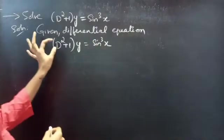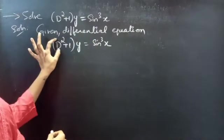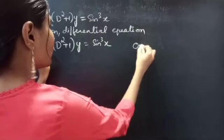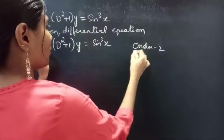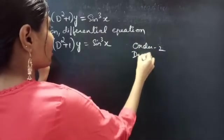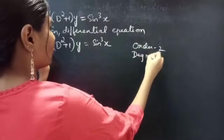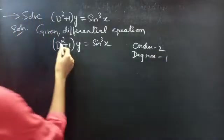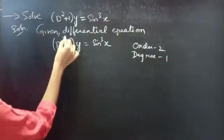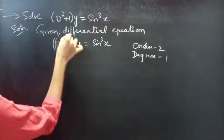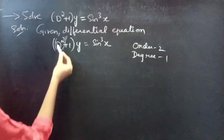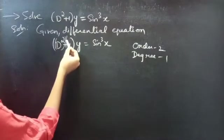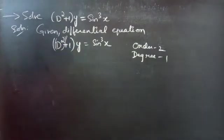Identify the highest derivative here. D² is the highest derivative, so our order will be 2. The highest power of the highest derivative is the degree, so the degree will be 1.